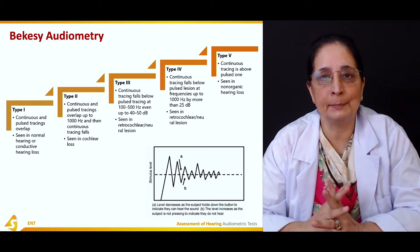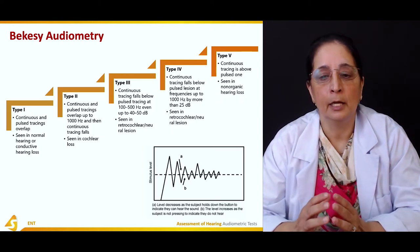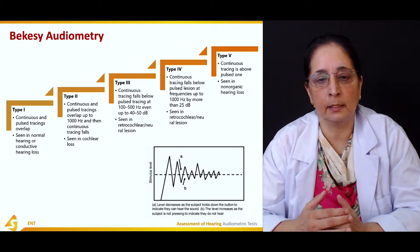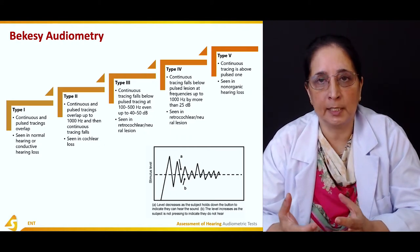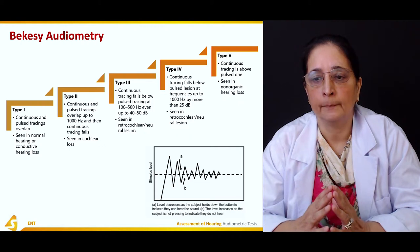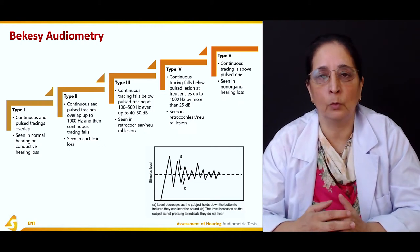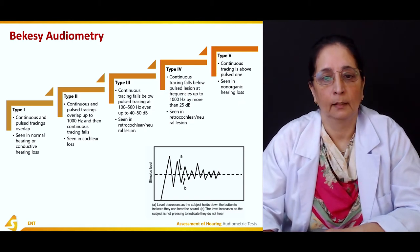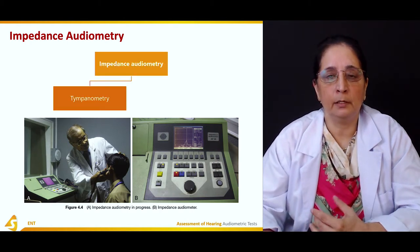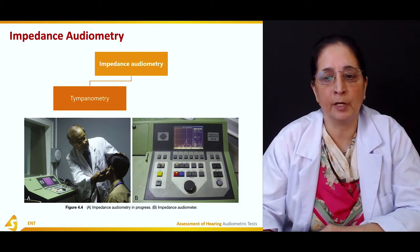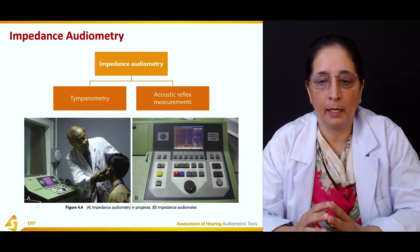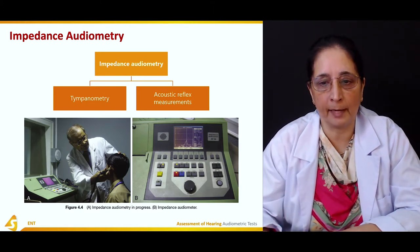VEXI audiometry is mainly used to identify cochlear, retrocochlear, or neural types of hearing loss, based on whether continuous tracings are above or below the pulsed tracing and at what frequencies. Next is impedance audiometry, which includes tympanometry and acoustic reflex measurement.